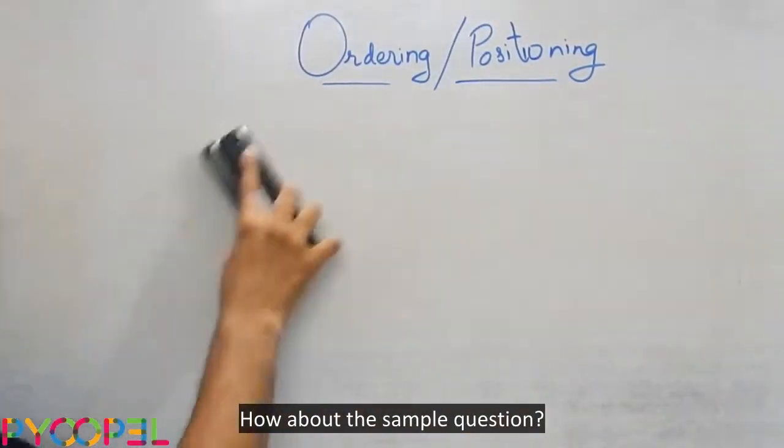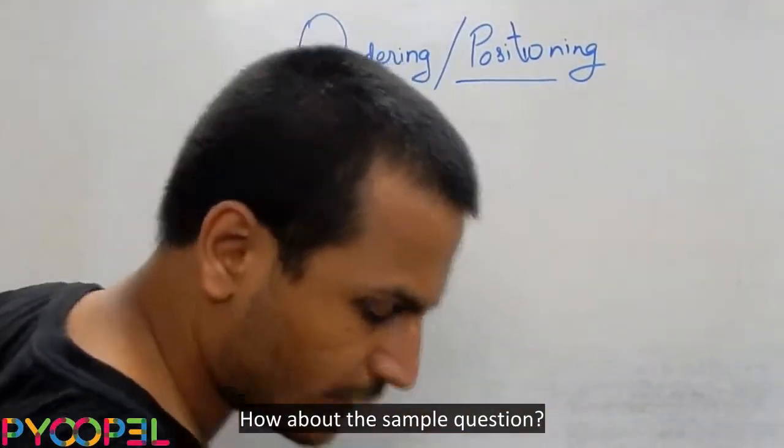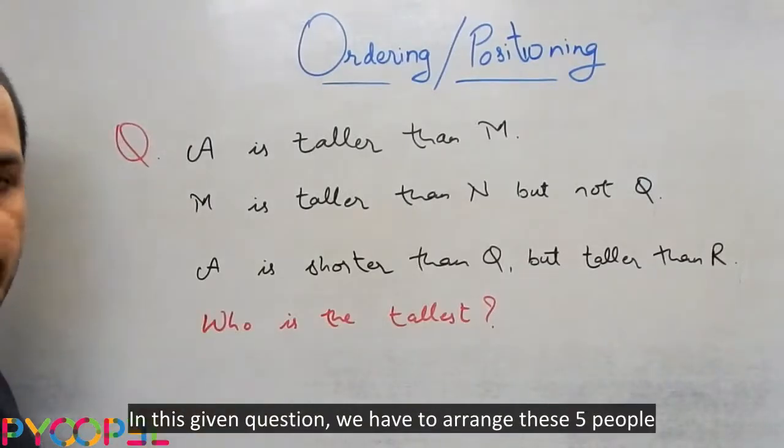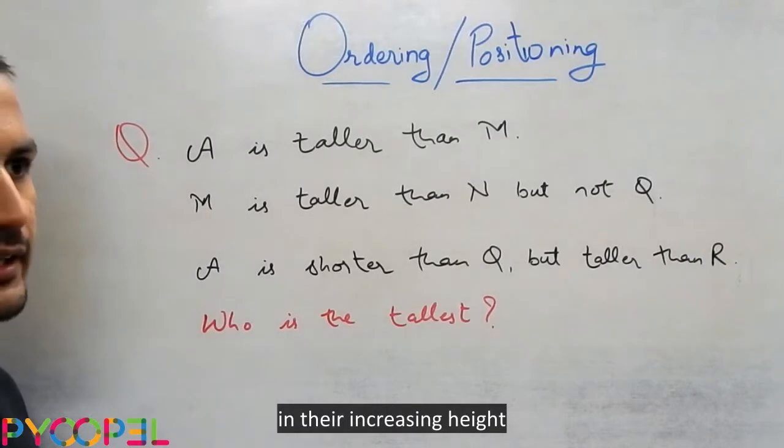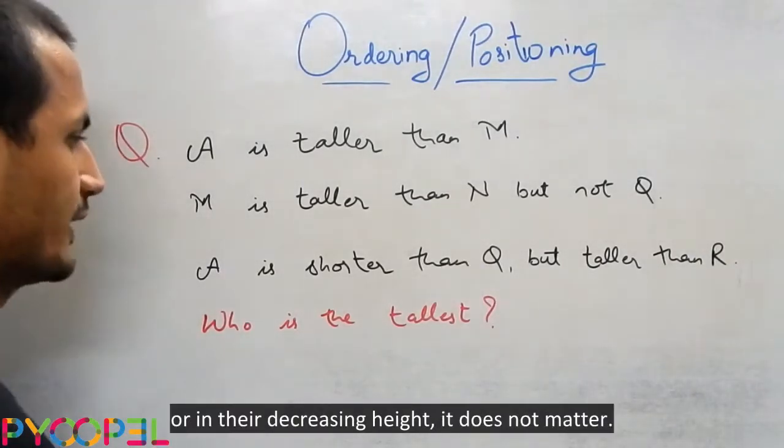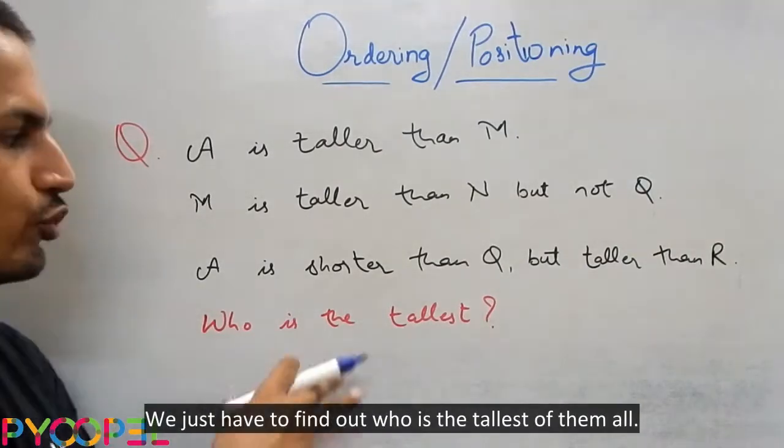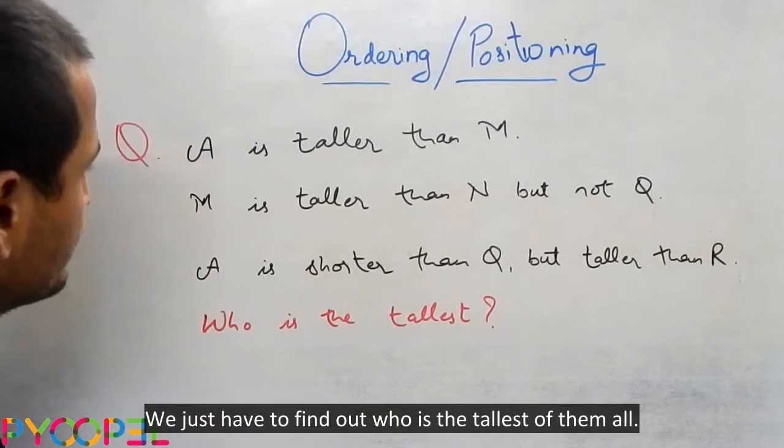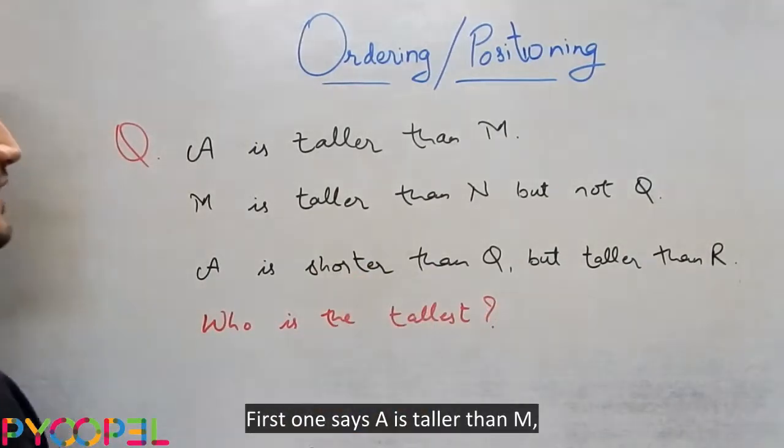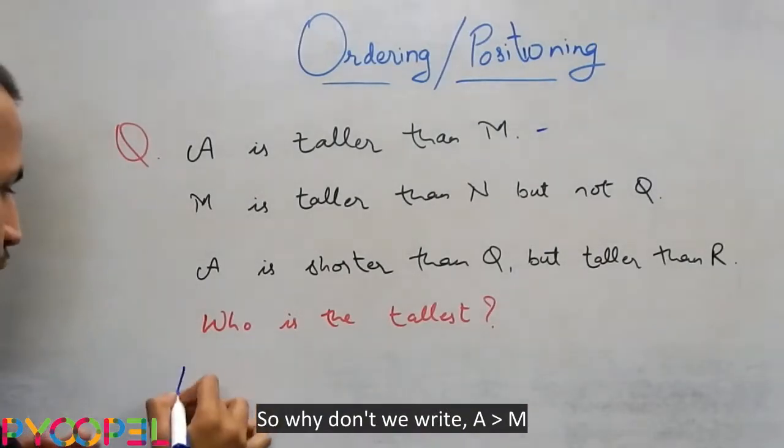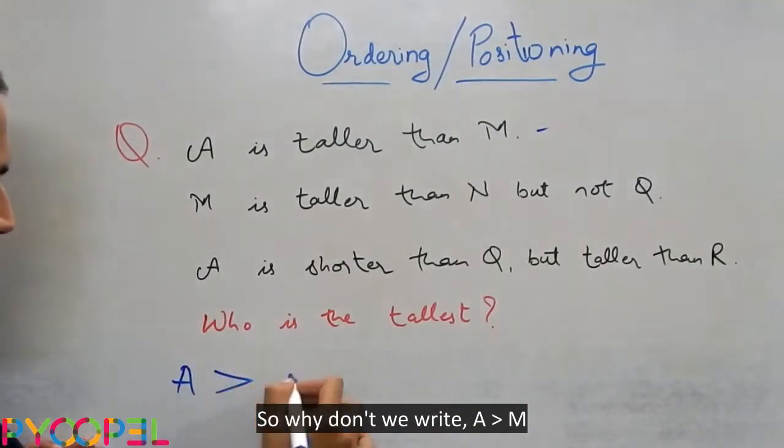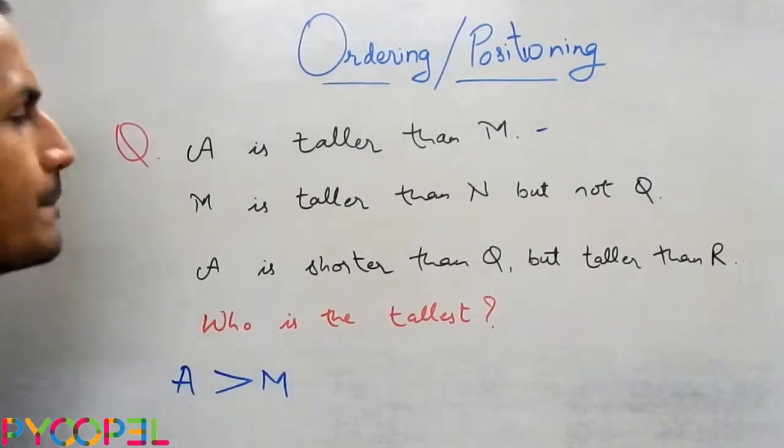Now how about the sample question? In this given question, we have to arrange these five people in their increasing height, or in their decreasing height. It does not matter. We just have to find out who is the tallest of the lot. So let's see. First one says A is taller than M. So why don't we write A greater than M.